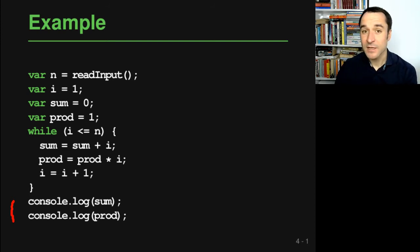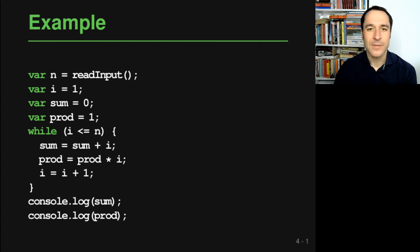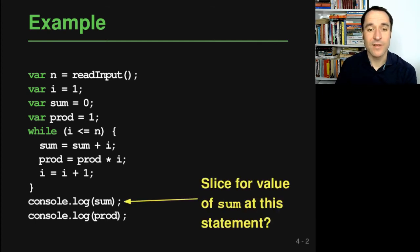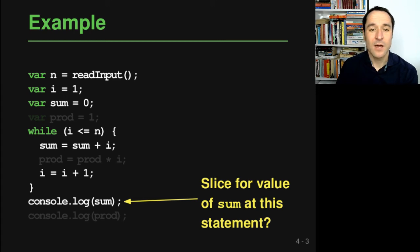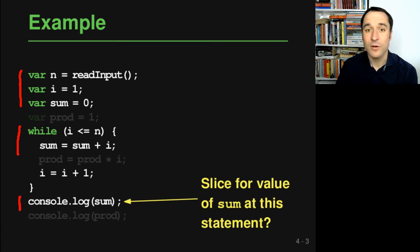This is not a particularly complex program — in practice you can just look at it and see what it's doing — but let's use this as an example of how slicing can reduce a full program into something relevant for a particular slicing criterion. Say our slicing criterion is that we care about the value of sum at this code location. The relevant statements are basically highlighted here; everything else could be removed. We still need the code that reads n and initializes i and sum, we still need the loop, but we do not need anything about the prod variable because it is not relevant for the value of sum.